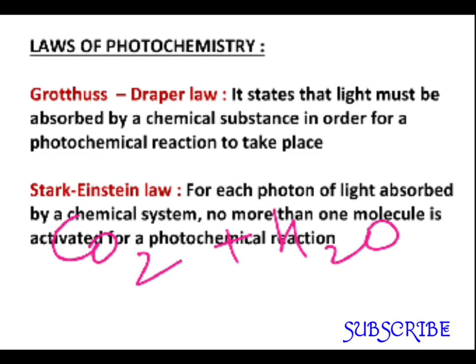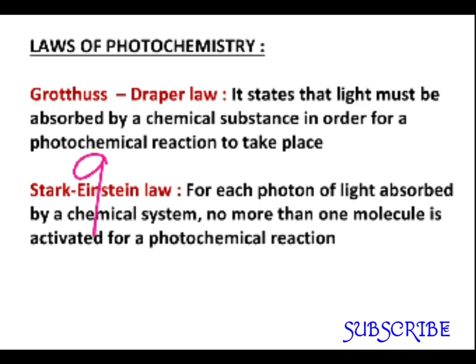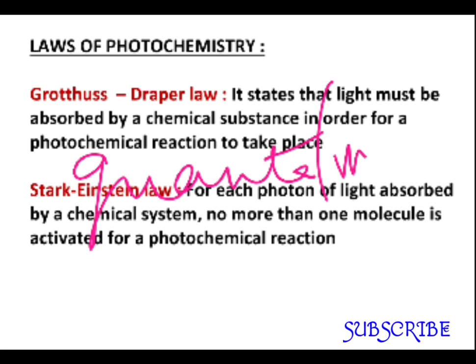So the Grotthuss-Draper law explains that light must be absorbed by the reactants or chemical substances, and then only a photochemical reaction can take place. The second law is the Stark-Einstein law. It states that for each photon of light absorbed by a chemical system, no more than one molecule is activated for a photochemical reaction.